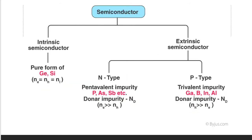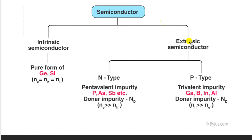Semiconductors are mainly of two types: intrinsic semiconductor and extrinsic semiconductor. A pure form of semiconductor is known as an intrinsic semiconductor — germanium and silicon in pure form are examples. When an impurity is added to a semiconductor, it is known as an extrinsic semiconductor. The impurity can be N-type or P-type.